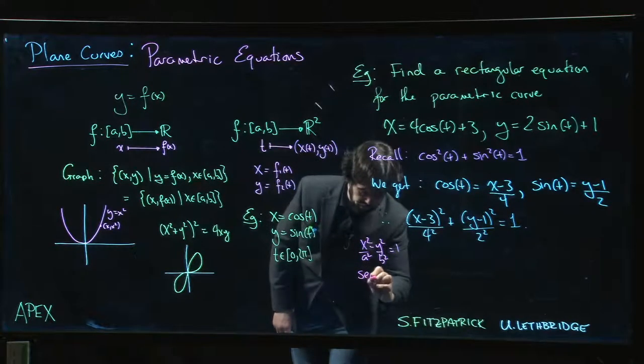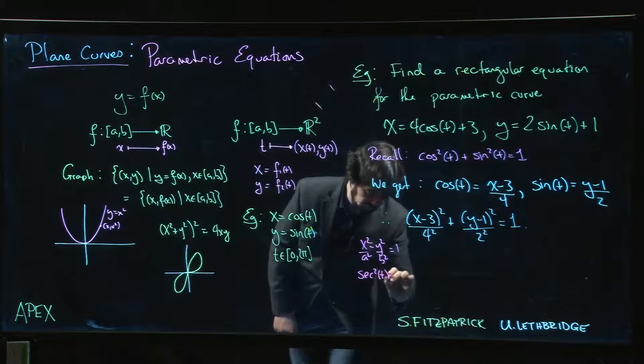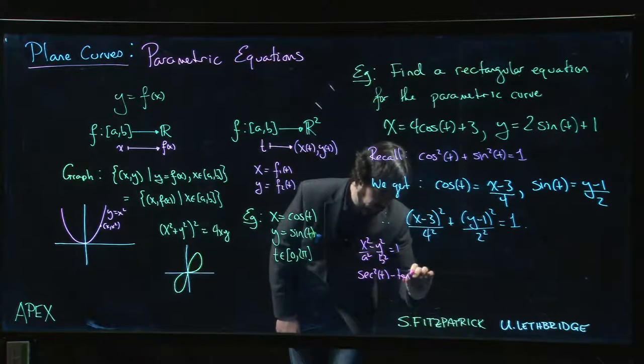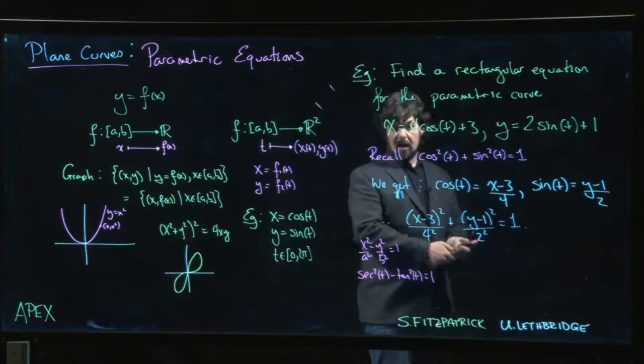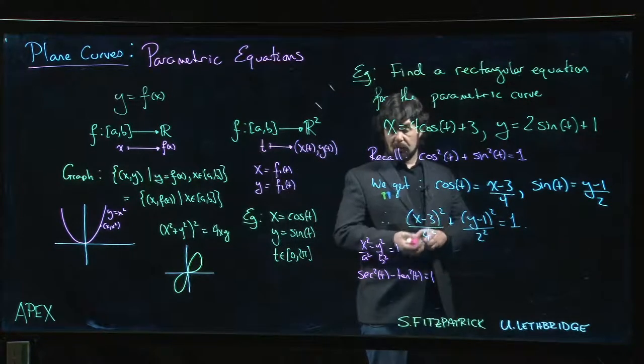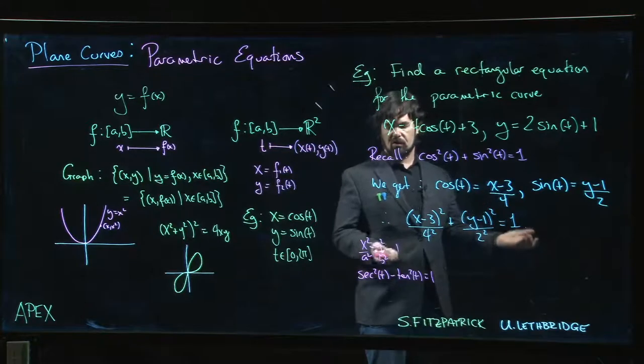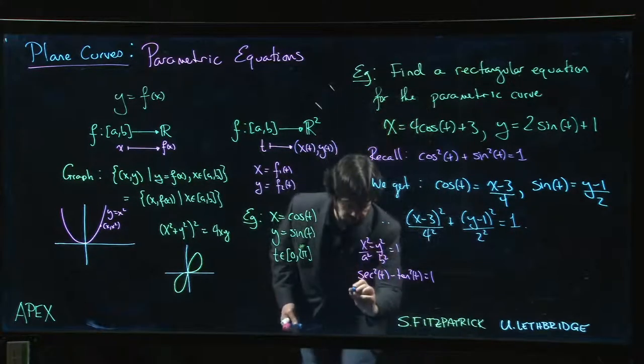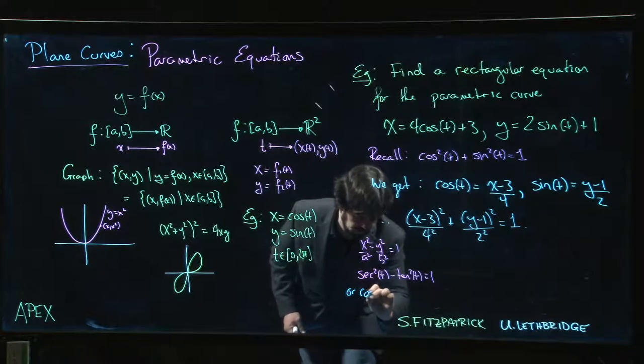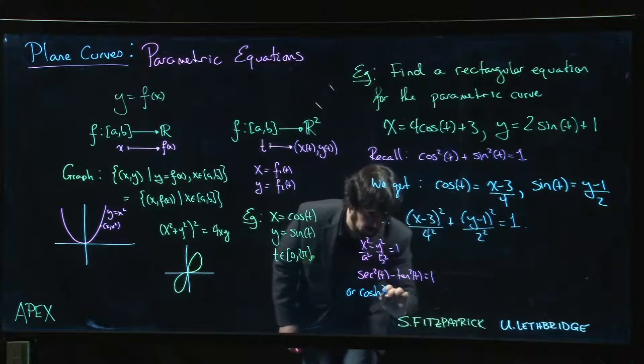Those of you who did hyperbolic functions know another way to parameterize the hyperbola. You could also exploit the fact that hyperbolic cosine and hyperbolic sine satisfy that same identity.